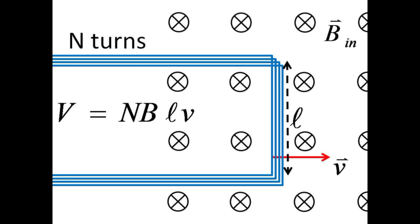If we use a coil with N such rectangular loops, we can enhance the induced voltage by a factor of N. This is why any real electrical generator will have many, many loops or windings of wire moving in a magnetic field.